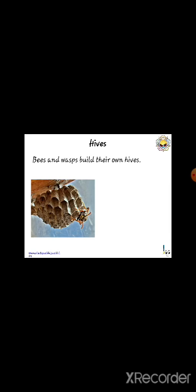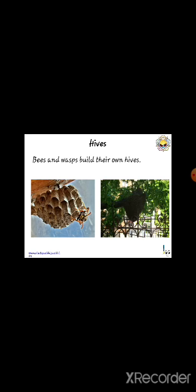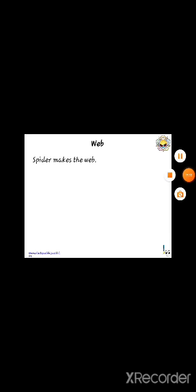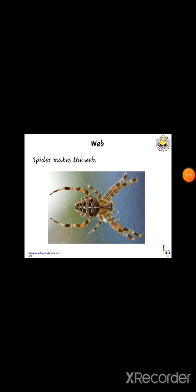Honeybees live in hives. Spiders live in webs. Cows live in sheds, dogs live in kennels, horses live in stables, and hens live in coops.